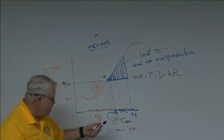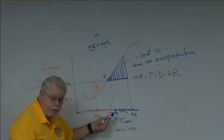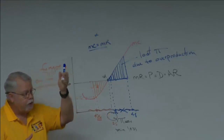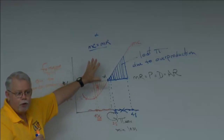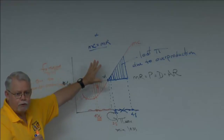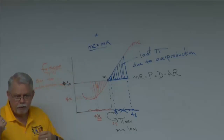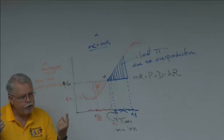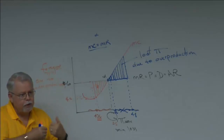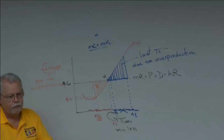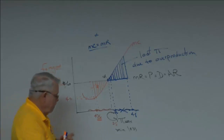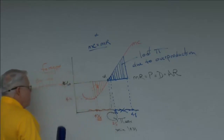Step two asks: if I produce that amount, will I make a profit, take a loss, or break even? That depends on two other curves — the demand curve and the average total cost curve. We have to look at those in the second part of the analysis.